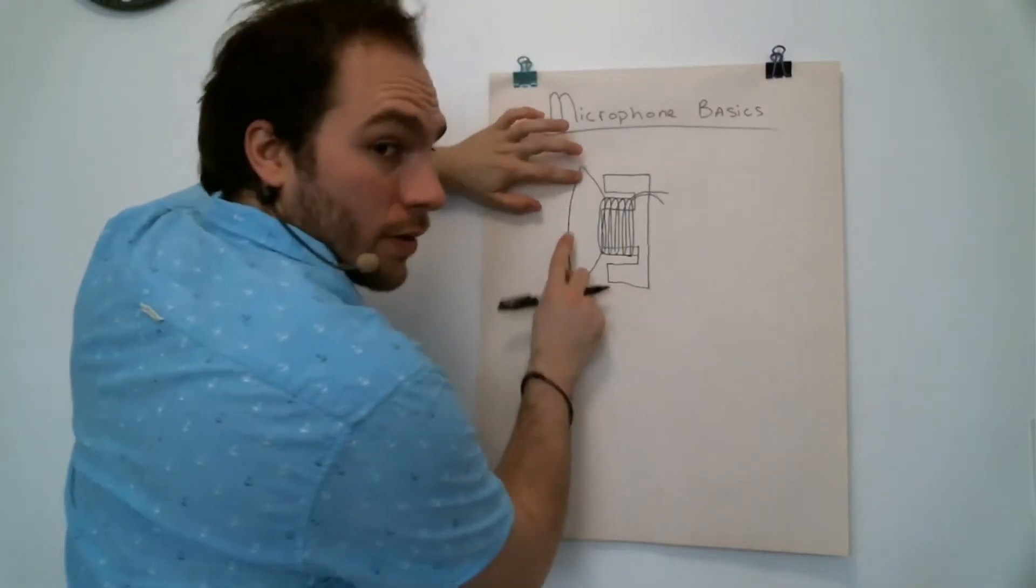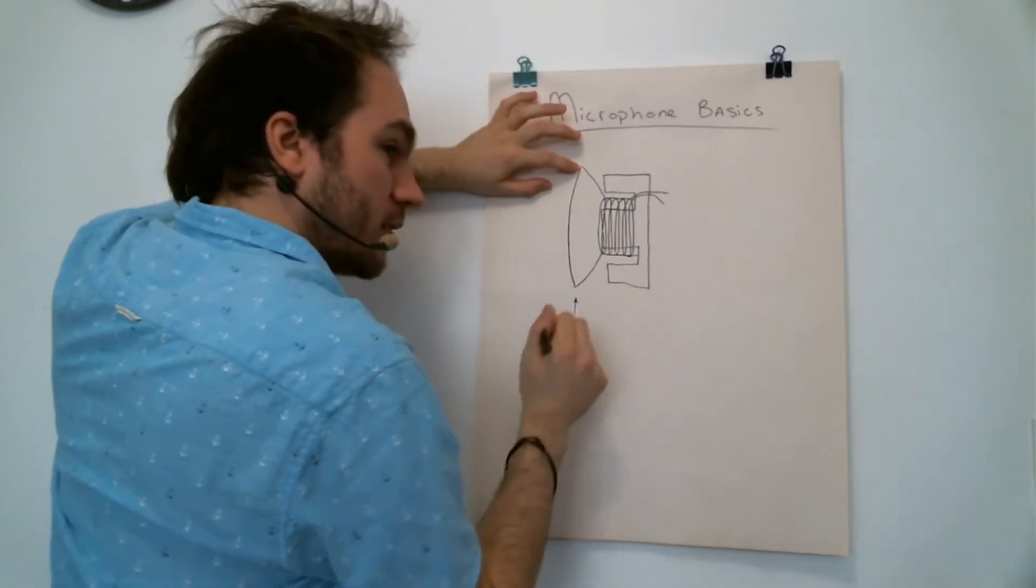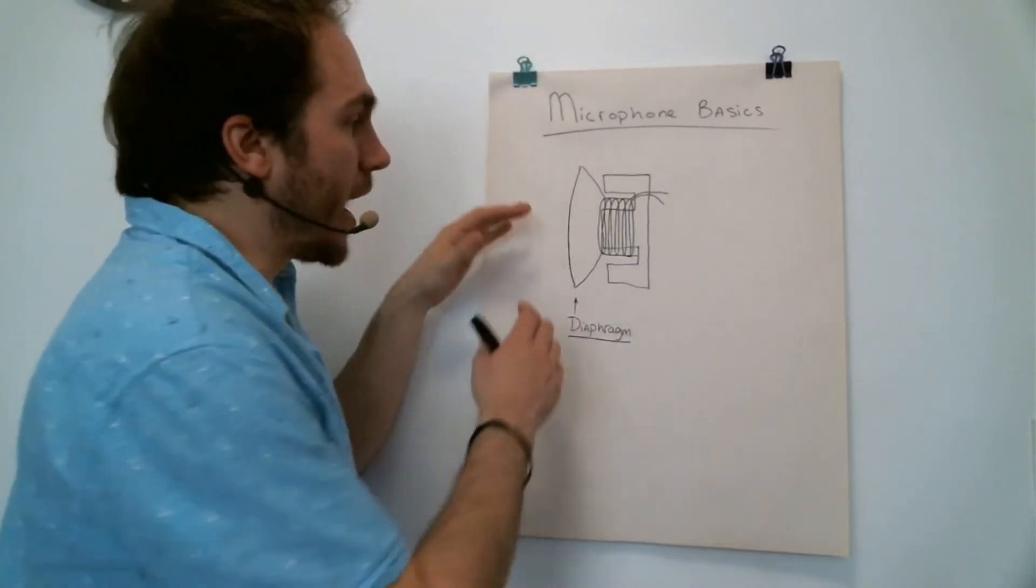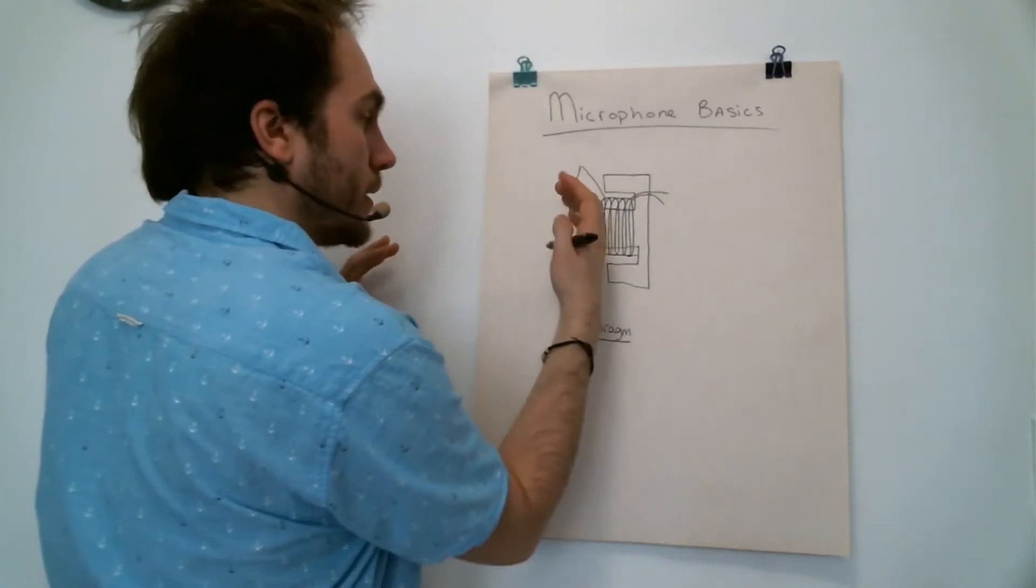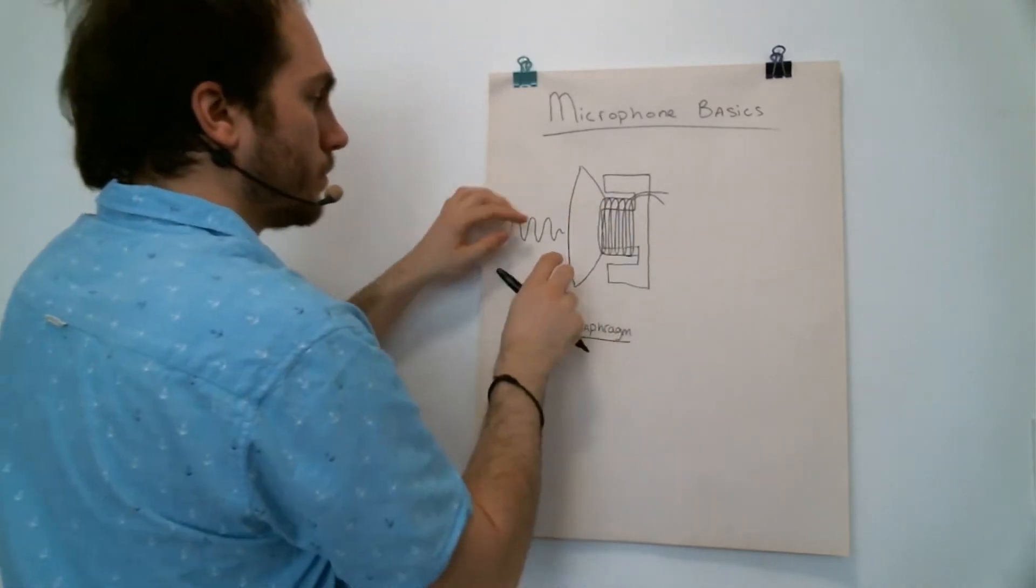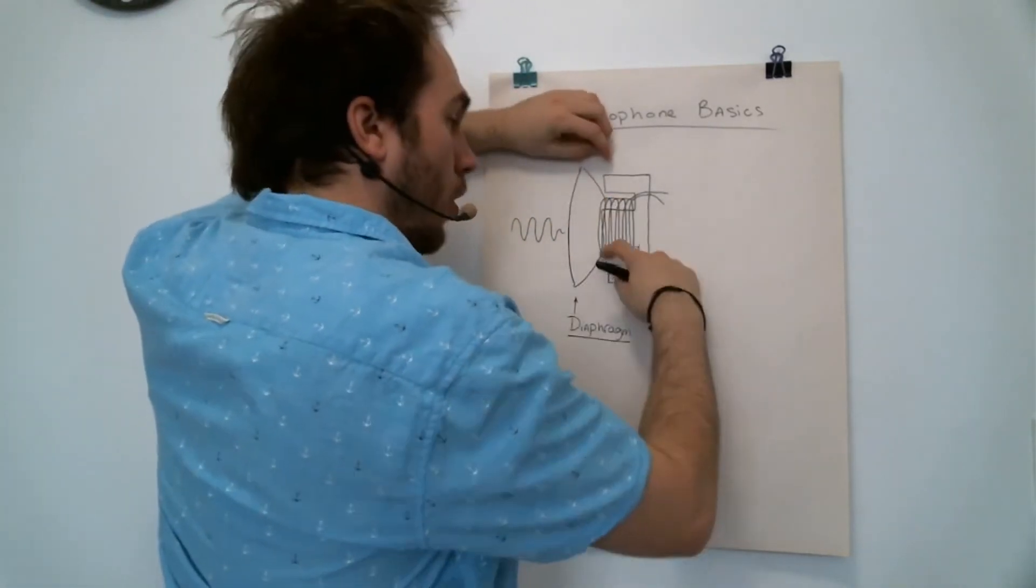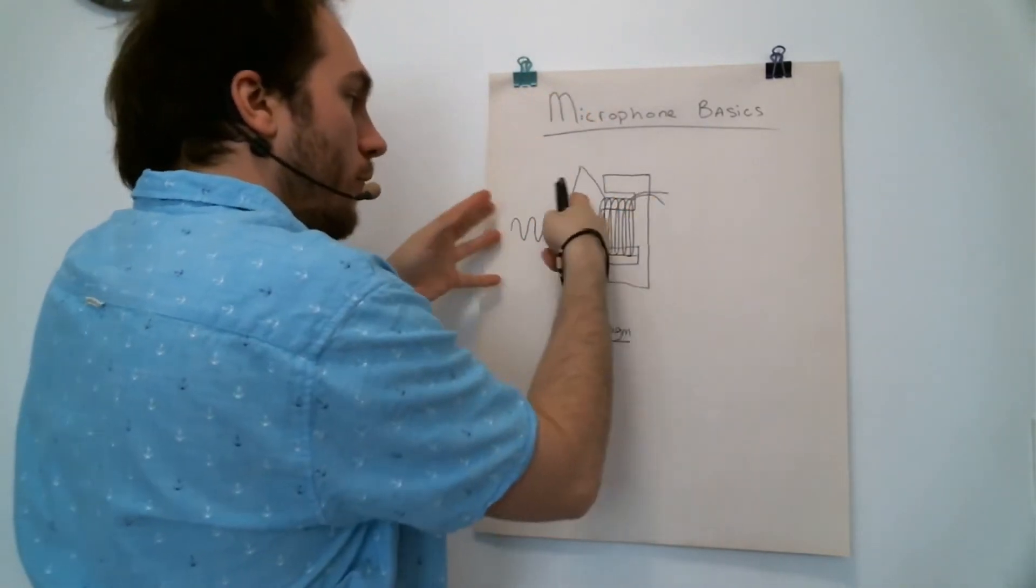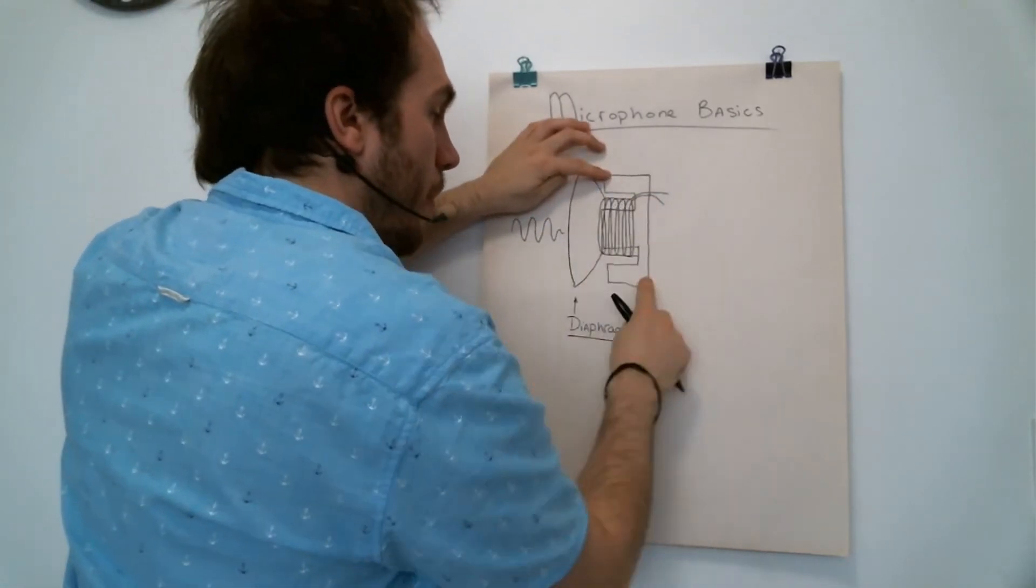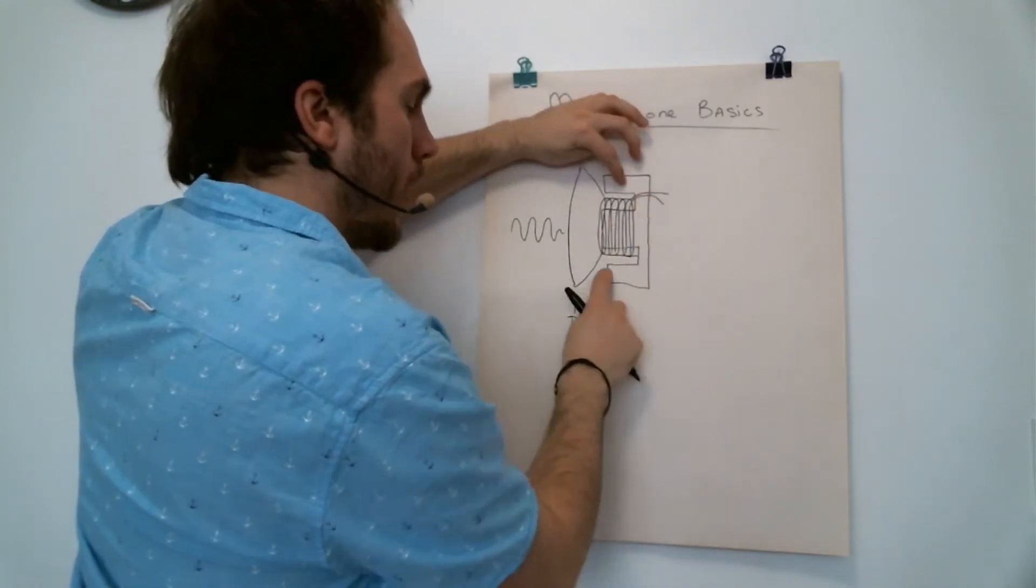Here we have a diaphragm which will react to the audio spectrum. The diaphragm will vibrate at each audio signal it can receive. This part is attached to a coil that will move with the diaphragm and create an electromagnetic field because of the magnet that is inside and around the coil.